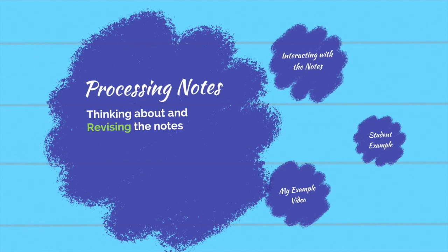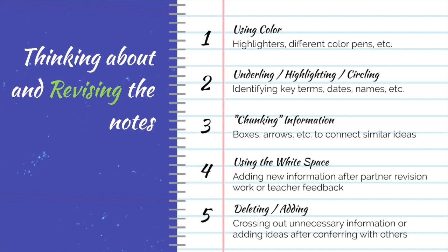The second phase is when we process our notes. Here you're going to use different colors from the original to highlight, underline, and circle key terms, dates, names, etc. This is also a chance for you to chunk some of the information — maybe using a box to group similar things, or arrows to link similar ideas. This is also a time to use that white space you saved during note-taking. You can add new information after discussing things with a partner, getting feedback from a teacher, or if the teacher gives you something you missed. It's also a great time to delete superfluous information — if you're in Notability, just erase it; if you're handwriting, cross it off or put a sticky note over it with the new information.